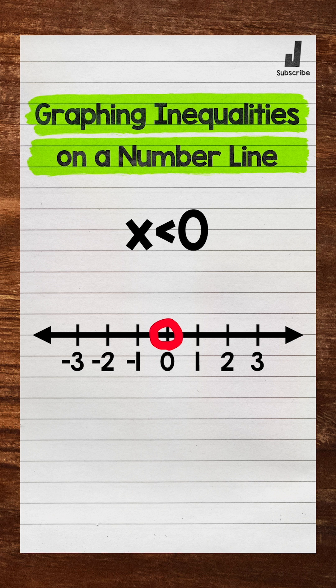So we need that open circle to show that 0 is not included. Then, since x is less than 0, we need all of the numbers that are less than 0. Those are the solutions of this inequality.